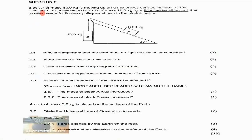Question 2 says Block A of mass 8 kg is moving up on a frictionless surface inclined at 30 degrees. This block is connected to Block B of mass 22 kg by a light inextensible cord that passes over a frictionless pulley as shown in the sketch below.